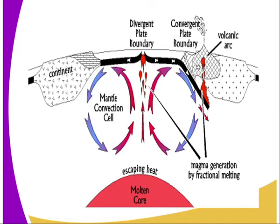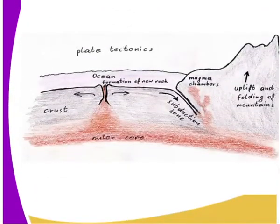The plates can diverge from one another, as you can see, resulting in that rift. Or they can converge towards one another, which is referred to as the convergent plate boundary. This can also result in volcanic activity, as you can see from the diagrams.